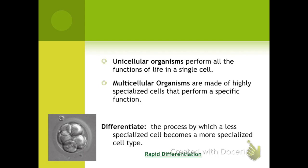Now that you've considered what we're going to be learning about today, we can get started. Thinking back to earlier in our unit, we talked about the fact that unicellular organisms perform all of the functions of life in a single cell — they retain the ability to exchange gases, to digest nutrients, etc. But multicellular organisms are made up of highly specialized cells that perform a specific function, and each of those cells has given up the ability to do one or more jobs in order to do a job better.